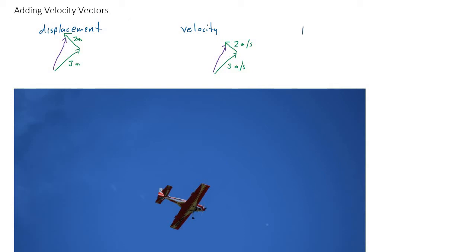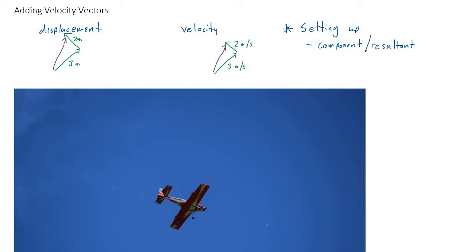The trickiest part of velocity problems is setting them up. We need to be clear on the difference between a component and a resultant. The components are the individual parts, and the resultant is their sum when added together. These problems can also be combined with kinematics equations—for example, we might solve for a resultant velocity and then use it to calculate a distance.